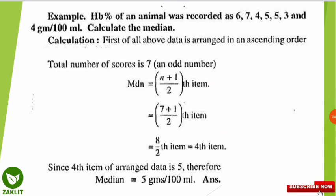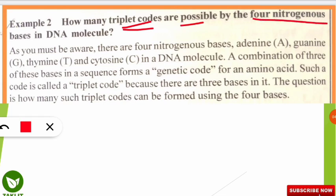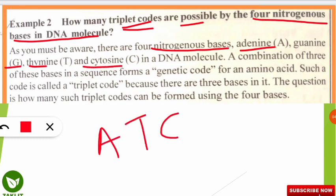Now the next question is biologically based: how many triplet codons are possible using the 4 nitrogenous bases in a DNA molecule? There are 4 nitrogenous bases in DNA: Adenine, Guanine, Thymine, and Cytosine — ATGC. The question asks how many codons or triplet codes are possible using these 4 bases, where each codon is a group of 3 bases, such as ATC or ATG.